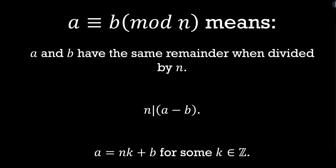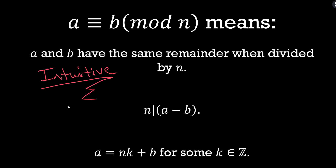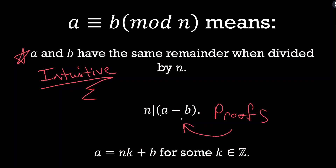To summarize: a is congruent to b mod n means a and b have the same remainder when divided by n — this is the intuitive definition, useful for understanding congruence. The second definition, n divides a minus b, is really useful for proofs. There's also a third related form from textbooks: a minus b equals n times k, which follows directly from the second definition by just adding b to both sides. Hopefully this video helped. Leave comments and questions below, like and subscribe, and keep flexing those brain muscles!